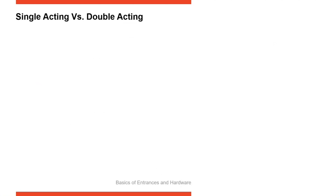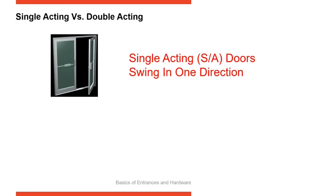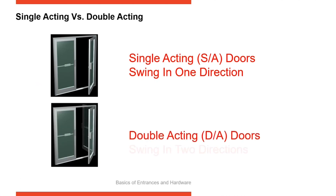Now, the first way we start dividing entrances — when we look at the options available to you — there are two big silos that all swing doors fall into. One of those is single acting, and the other is double acting. A single acting door is one that opens in one direction; the leaf is going to swing either to the interior or to the exterior. A double acting door has a leaf that swings both to the interior and to the exterior. That's the first way we break all swing doors into either single acting or double acting.